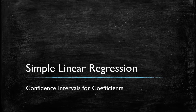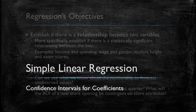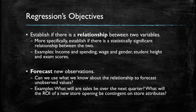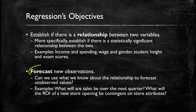Welcome to our second video on simple linear regression. In this video we will discuss how to construct and interpret confidence intervals for the coefficients. We're going to start by recalling the two main objectives of regressions. The first is to establish a statistically significant relationship between two variables, and the second objective is to forecast new observations. Today we're focusing on the first objective — specifically on establishing a statistically significant relationship.